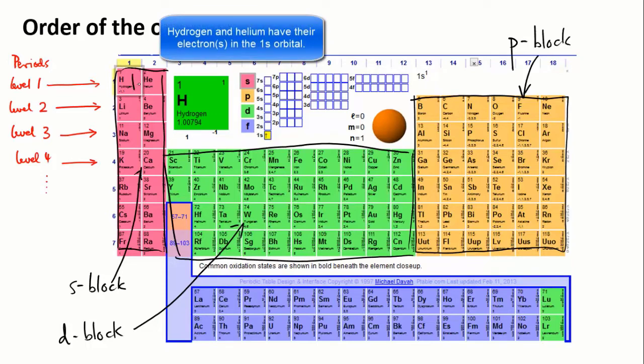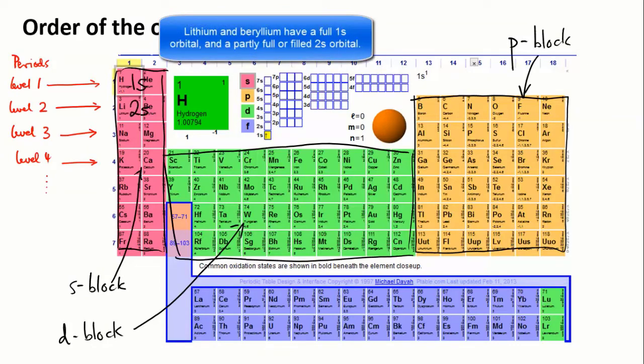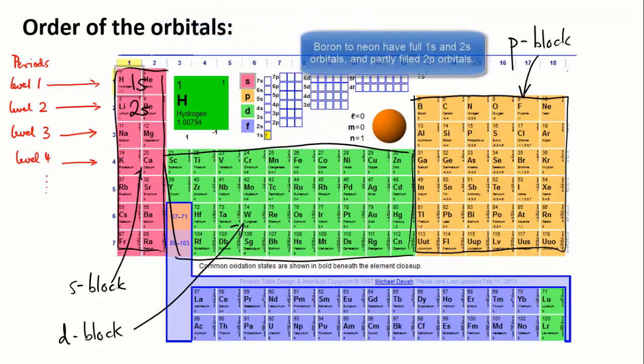You have the 1s orbital. You then move to level 2, so period number 2. So, the next elements, lithium and beryllium, they're still in the s-block, so they're 2s. Moving across the period, we're still in level 2, but we're now into the p-block. So, these are the 2p orbitals.